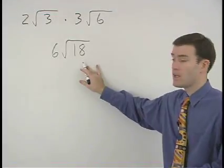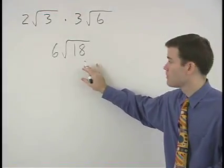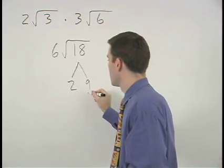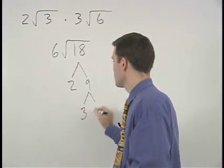Notice that the square root of 18 breaks down. 18 is 2 times 9, and 9 is 3 times 3.